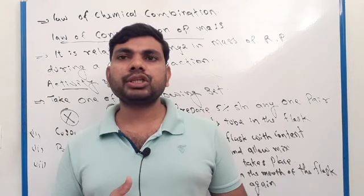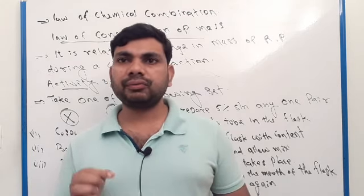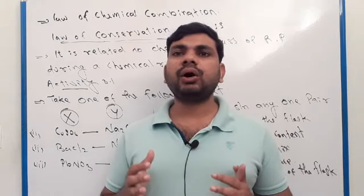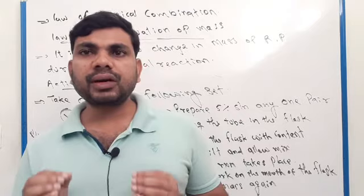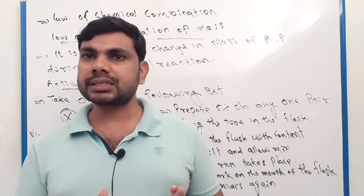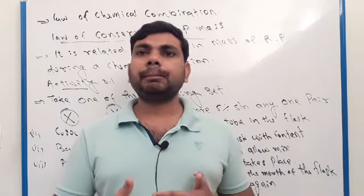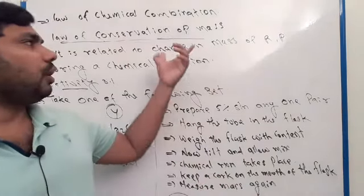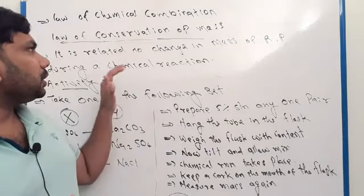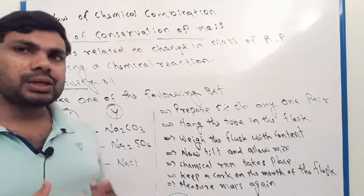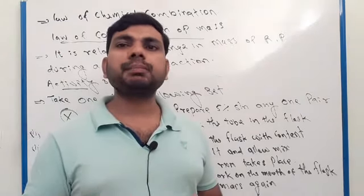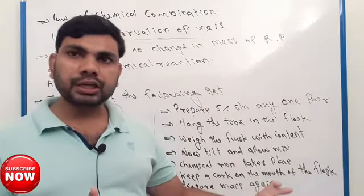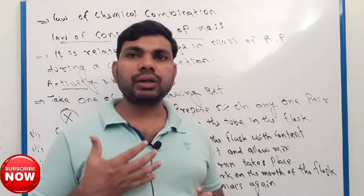The law of chemical combination consists of two laws. The first one is the law of conservation of mass. As its name indicates, it is related to mass — specifically, the change in mass of reactants and products during a chemical reaction.